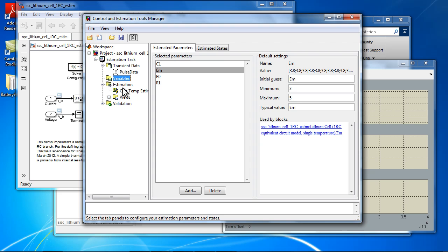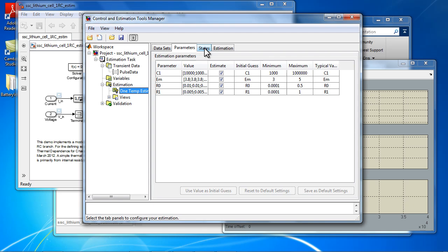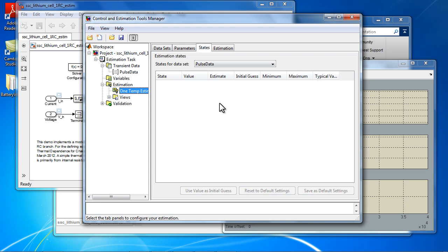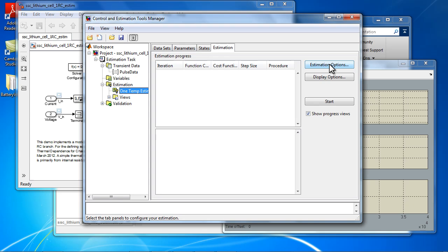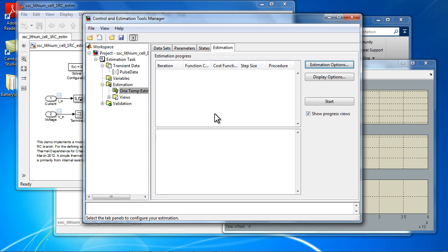And in this node, you set up your estimation. You can set up multiple tasks here if you want. But I've set up a task here where I selected which datasets to use. In this case, there's only one. I've selected which of the parameters we're going to adjust in this task. We don't actually have any initial states to tune, but this tab will allow you to tune initial states. And then we have this estimation tab where you can set up some options and then watch the estimation progress. You have the option here if you like to use parallel computing by checking this box. That will actually speed up the estimation by using the multiple cores on your machine.